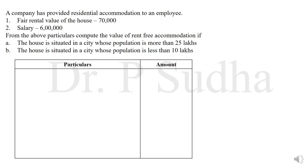A company has provided a residential accommodation to an employee. Since it is a company, this means he is a non-government employee under the other employee category. There is no information that the house is taken on rent, so the house is owned by the employer. If the employer is the owner, we should check the population. The question asks us to compute the value of rent-free accommodation under two situations.